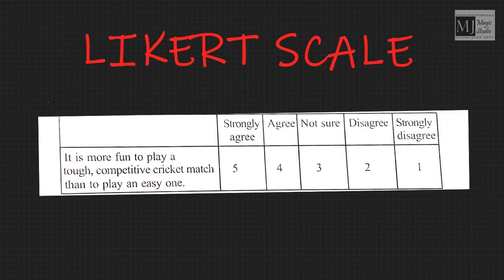For example, in a study measuring attitudes towards a game like cricket, one can ask: 'It is more fun to play a tough competitive cricket match than to play an easy one.' The five scale options provided would be: strongly agree (5 points), agree, not sure, disagree, or strongly disagree.